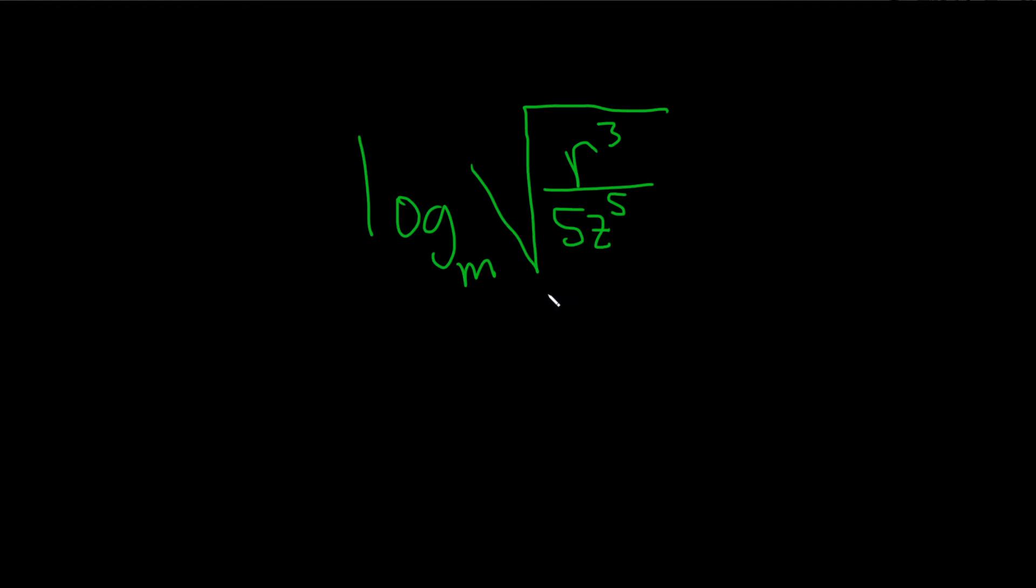The very first step we're going to do is deal with the square root. Remember a square root can be written as an exponent to the one-half power, so let's do that first. This is the log base m of this entire thing here, so r cubed over 5z to the 5, and all of this is being raised to the one-half power like that.